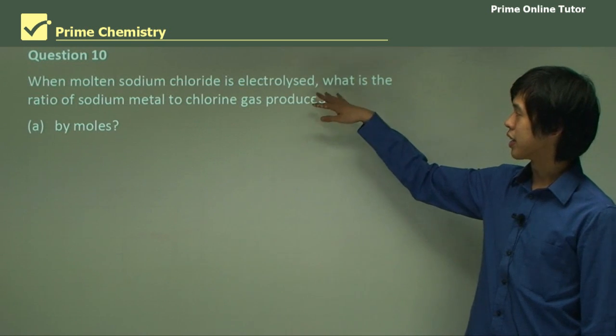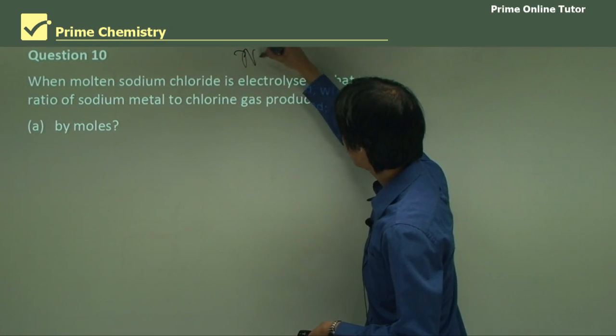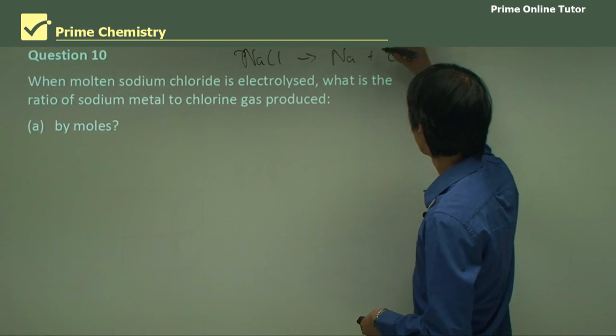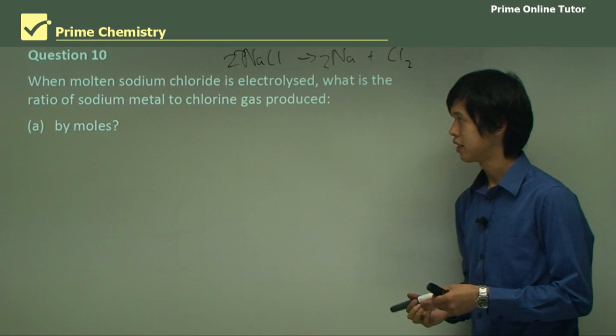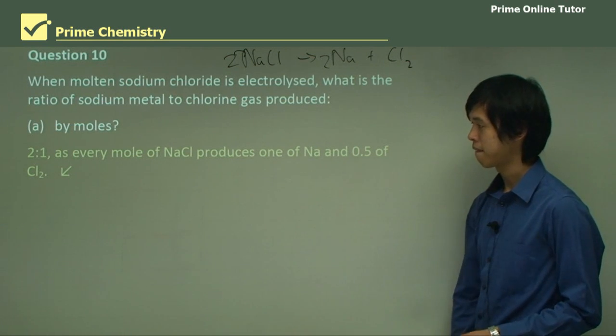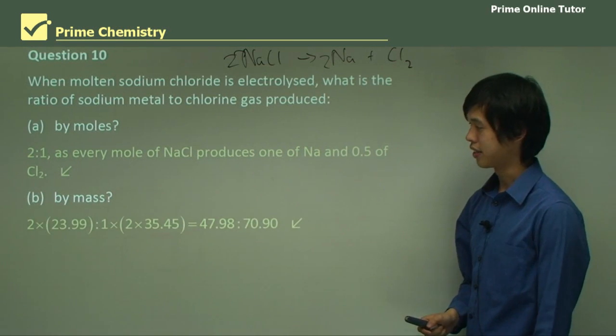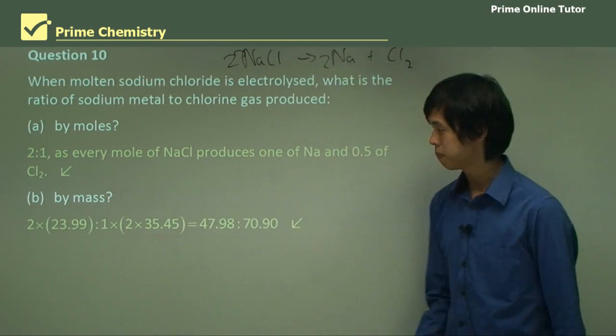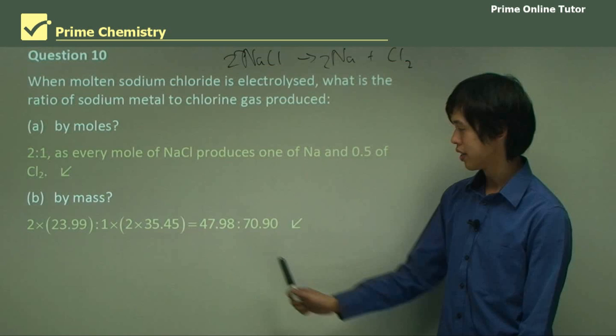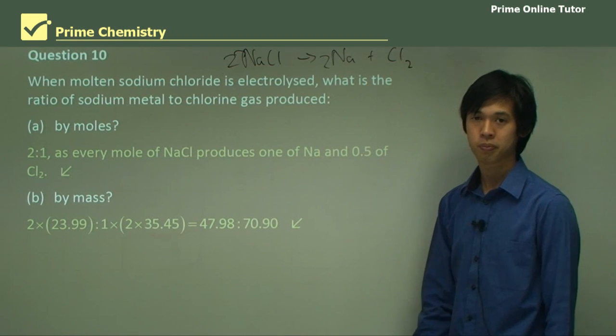When molten sodium chloride is electrolyzed, what is the ratio of sodium metal to chlorine gas produced? Let's write up the equation: 2NaCl forms 2Na solid plus Cl2. Sodium metal to chlorine gas by moles is 2 to 1. And by mass, we need to know the molar mass of this. We get 2 times 23.99, which is the molar mass of sodium, and 2 times the molar mass of a single chlorine atom. And then you get 47.98 to about 70.9. So this is much heavier than this one.